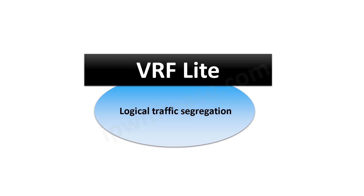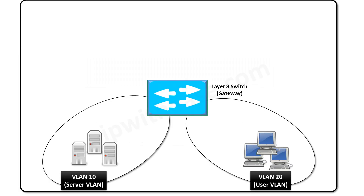Let's take a scenario where we can perform traffic segregation by using VRF-Lite. As shown in the diagram, we have two VLANs: VLAN 10 and VLAN 20. VLAN 10 subnet is for servers, while VLAN 20 subnet belongs to users.